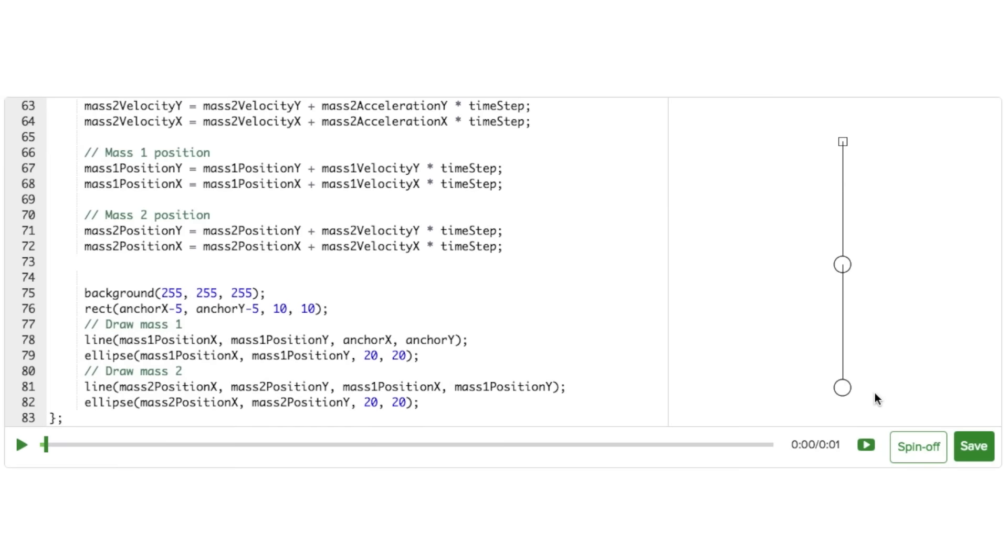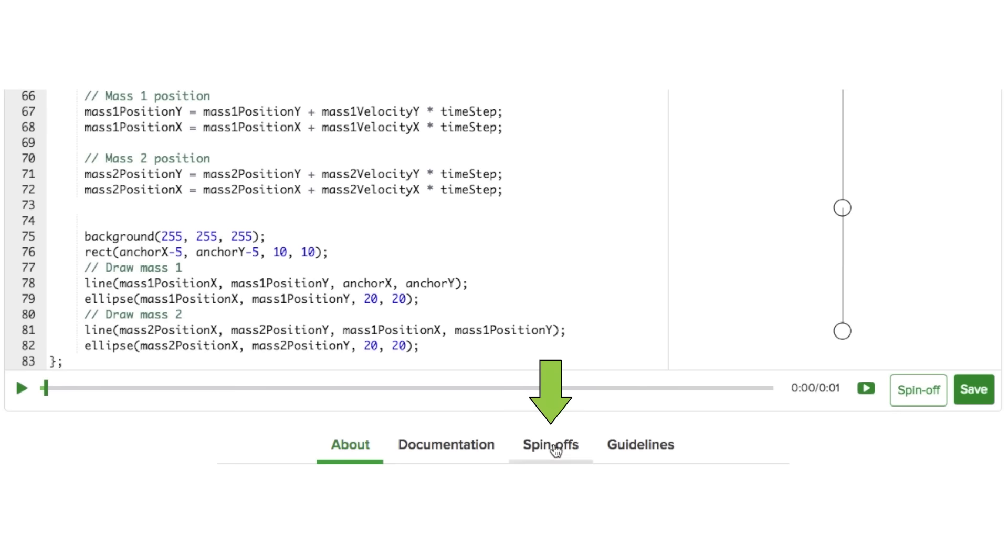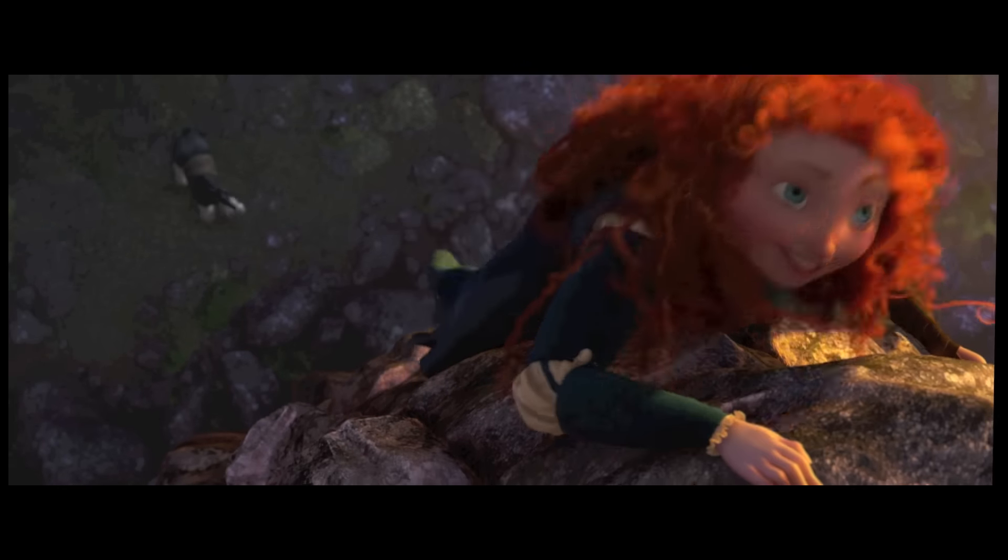See if you can think of other materials that could be created using mass spring systems. And that's the goal of this final project. Your job is to modify this program to make whatever you can dream up. The program you spin off will automatically show up below under the spin-offs tab, along with everyone else's. And I really encourage you to check out other creations to get new ideas for inspiration. Have fun and happy exploring!